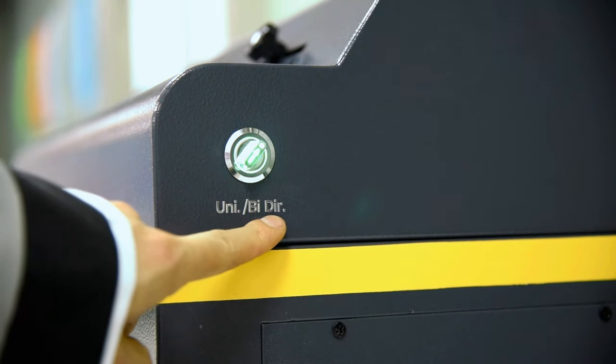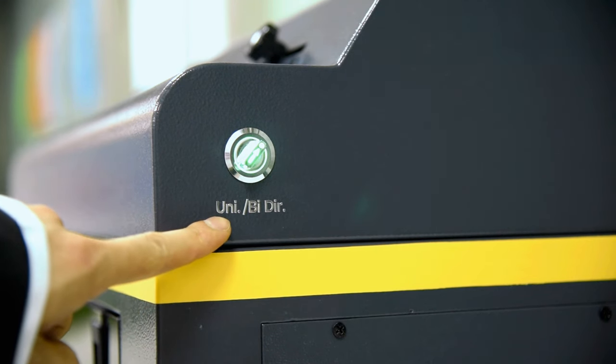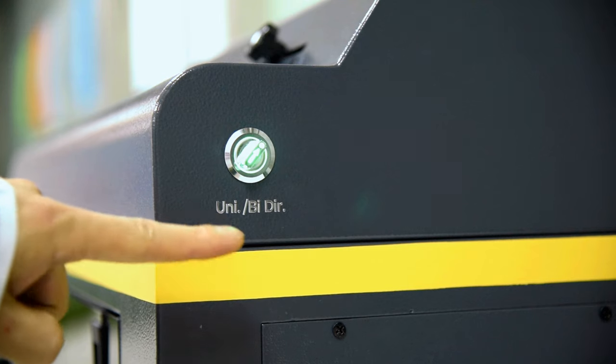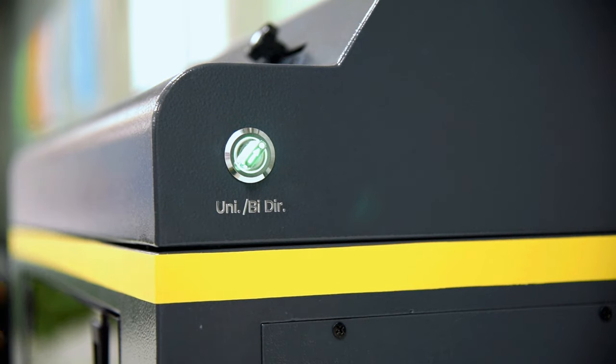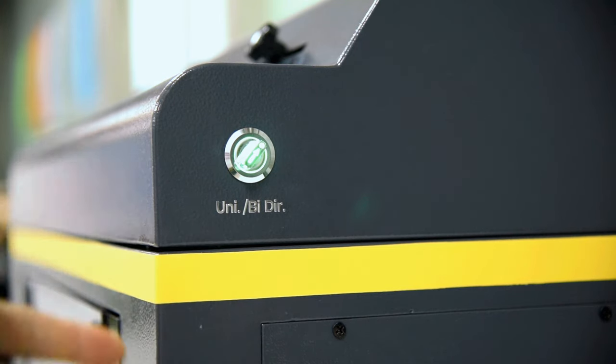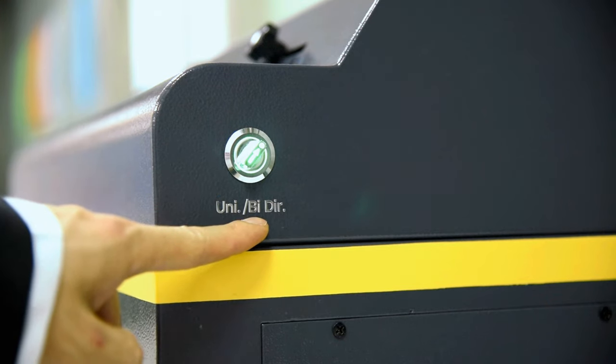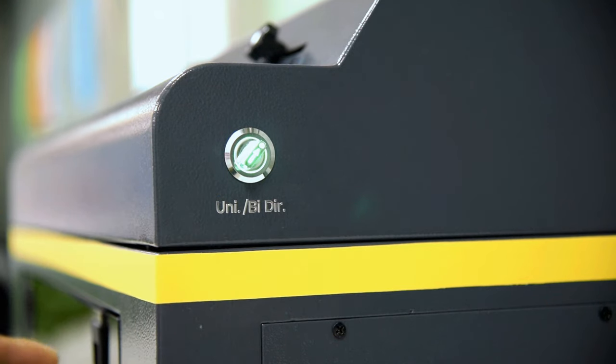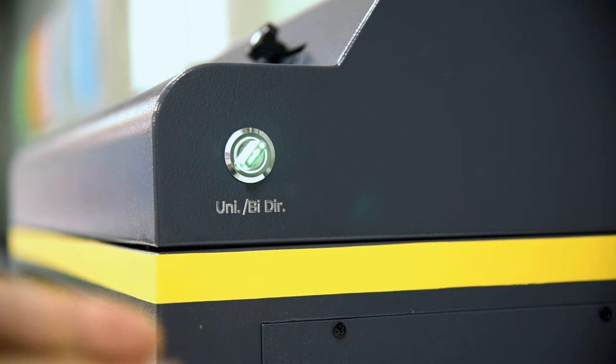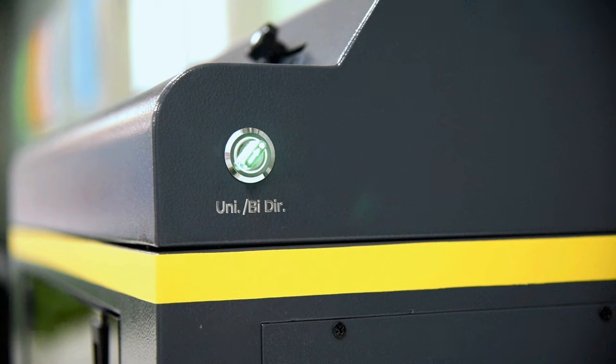When we go to the back side of the machine, there's another button named unit direction and bi-direction. Unit direction means to pretreat the t-shirt by one pass, just one way. If you convert to bi-direction, that means pretreat the t-shirt by double amount - the first pass sprays and going back also sprays, doing a round trip to complete the process.